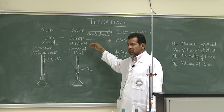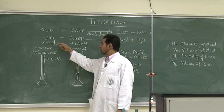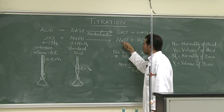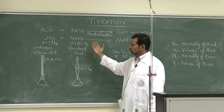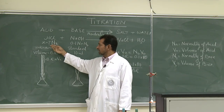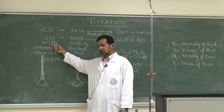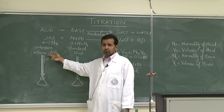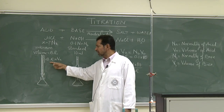For our case, we are taking hydrochloric acid as an acid and sodium hydroxide as a base, to produce sodium chloride as a salt, and water. Among these two solutions, hydrochloric acid is unknown — we don't know its concentration, which is called NA. The volume of the acid is also determined by the burette reading, abbreviated BR, and that is called VA.